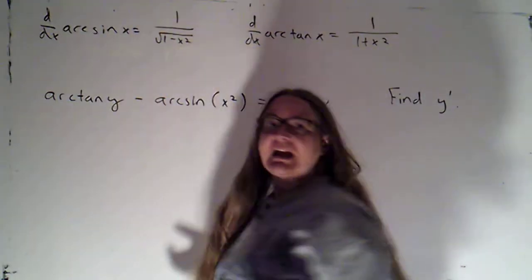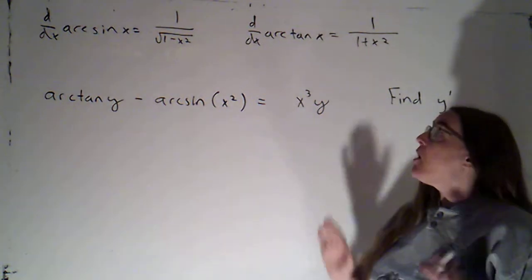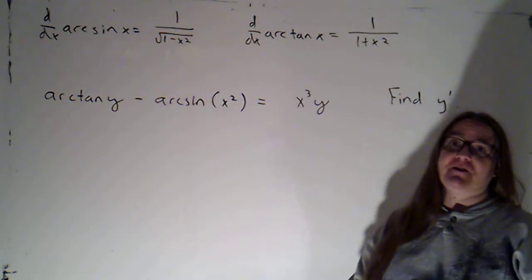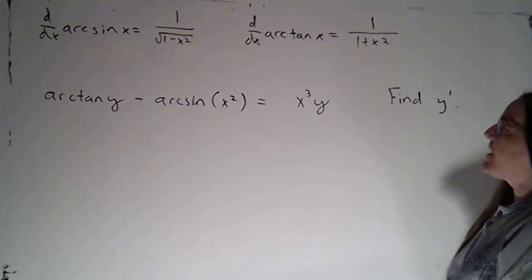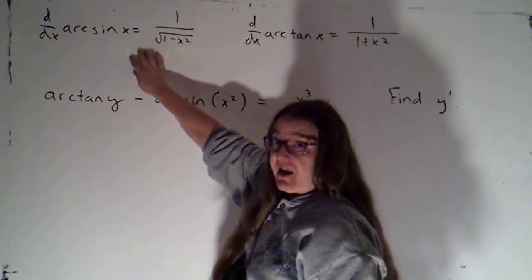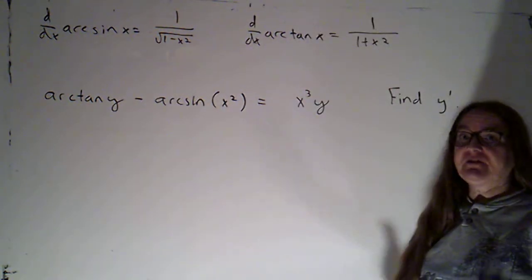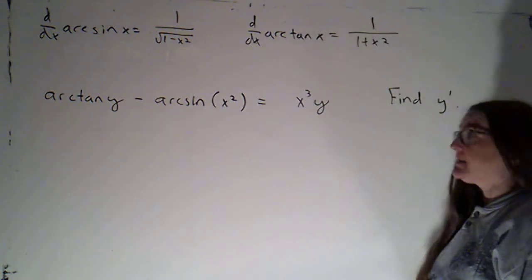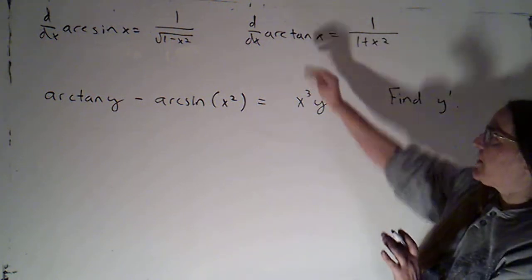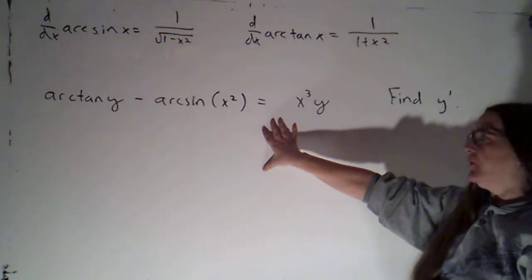Alright, I promised that we would come back and do some more implicit differentiation problems once we had the formulas for the inverse trig functions. So that's what we've got here. Now you are responsible for knowing the derivatives of arc sine, arc tangent, arc cosine, and arc secant as well. However, since they're new I put them up on the board — just those two because they're the two that show up in this problem.